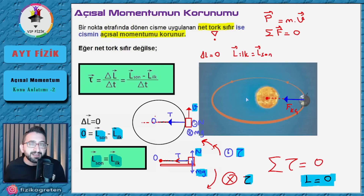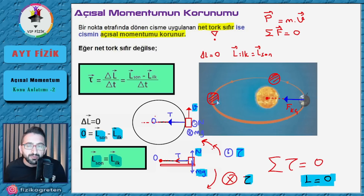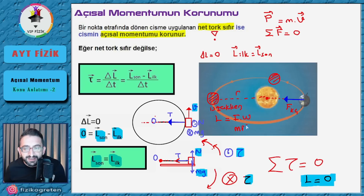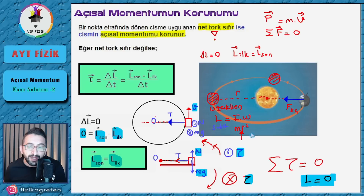Dünya güneşe yakınken ne oluyor, uzakken ne oluyor? Bulduğumuz sonuca göre açsal momentum her iki durumda da aynı çıkması lazım. L = I × ω formülünde, L'nin korunduğunu biliyoruz çünkü tork sıfır. Dünya uzaktayken güneşe olan uzaklık R artıyor; eylemsizlik momenti I, M×R² ile orantılı olduğundan I artıyor. L sabit olması gerektiğinden I'nın büyümesine karşılık açsal hız ω küçülüyor. Yani Dünya güneşe uzakken açsal hızı küçük, dolayısıyla çizgisel hızı da küçük olur.